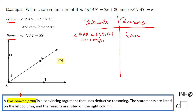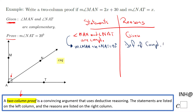That is given — this is the first statement you want to write on a two-column proof. Then we move to the next statement, which needs to be connected to this one. The second statement is: the measure of angle MAN plus the measure of angle NAT equals 90 degrees. This is what it means when two angles are complementary.